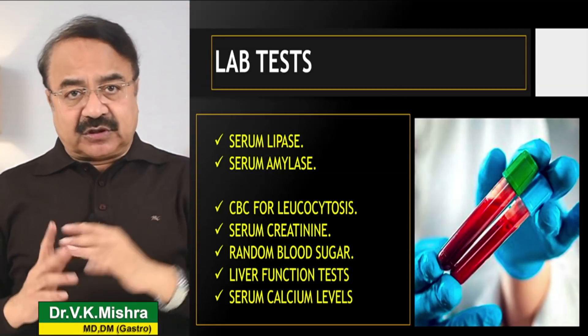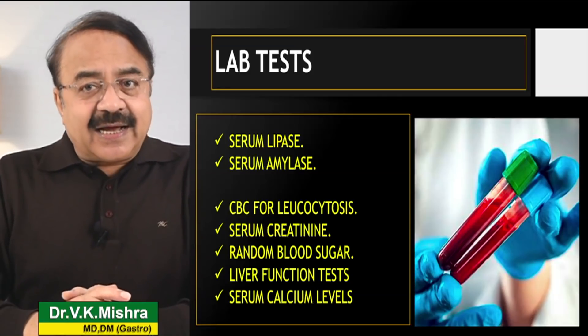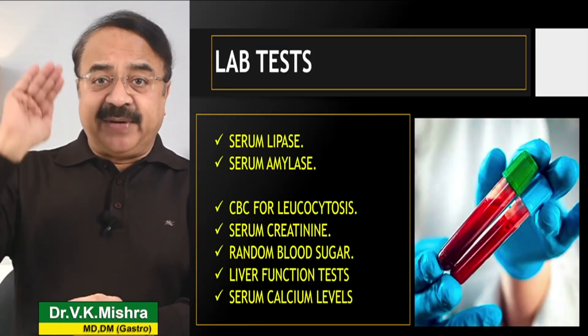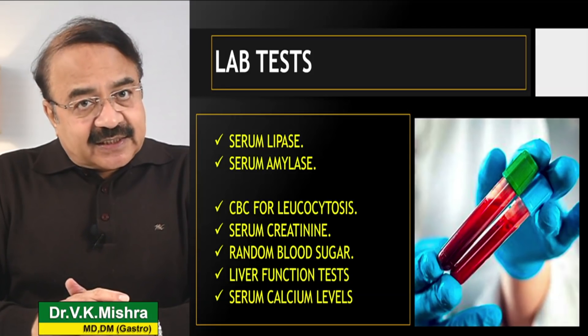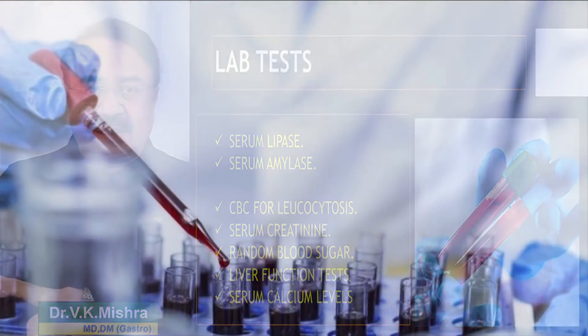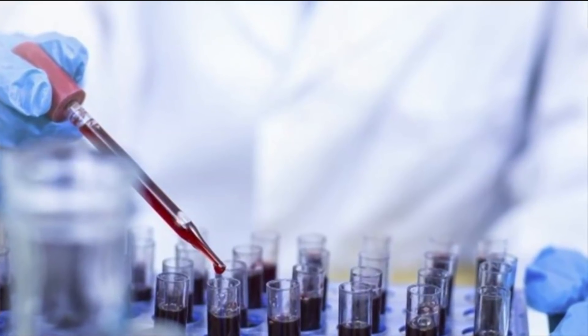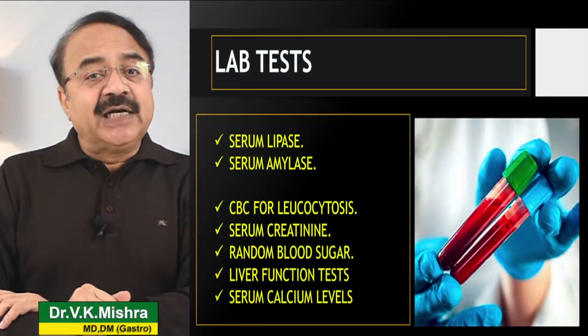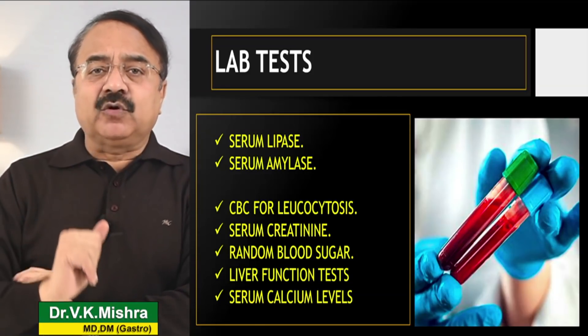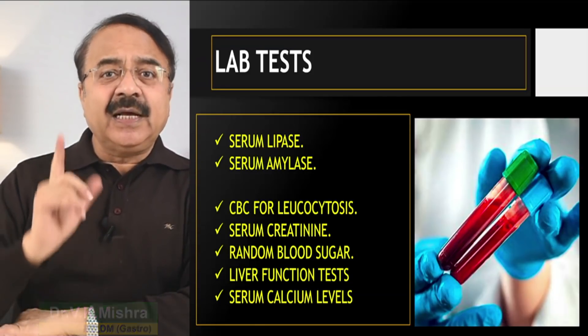Hemoglobin ज़्यादा दिखाई दे रहा है तो hemoconcentration हो गया — उसके चलते hemoglobin 17, 18, 19 भी पहुँच सकता है. Kidney function derange हो जाए तो creatinine का level ऊपर चला जाता है. Blood sugar examination ज़रूरी है क्योंकि pancreatitis में blood sugar हमेशा बढ़ती है. Liver function भी देखने पड़ते हैं, और serum calcium level भी देखना पड़ता है.